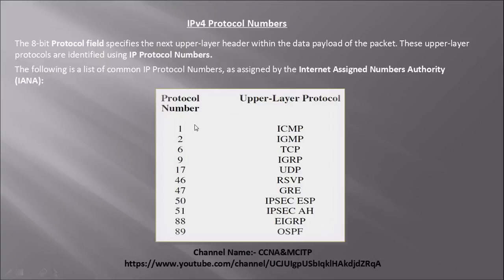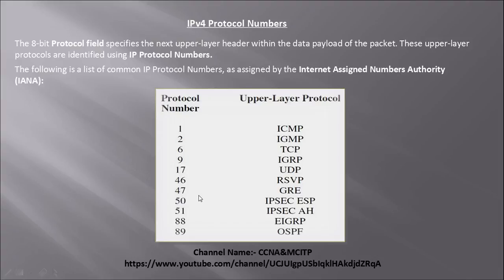If we talk about ICMP, the protocol number is 1. IGMP has protocol number 2. TCP has protocol number 6, and IGRP has protocol number 9. UDP has protocol number 17. Similarly, RSVP has protocol number 46, GRE is 47, IPSec ESP is 50, and IPSec AH is 51.